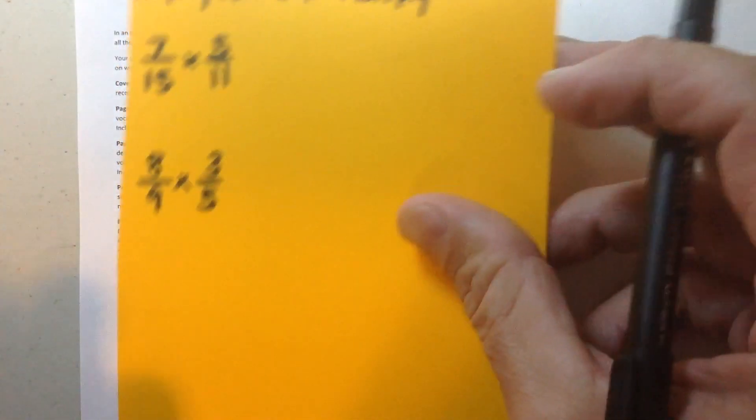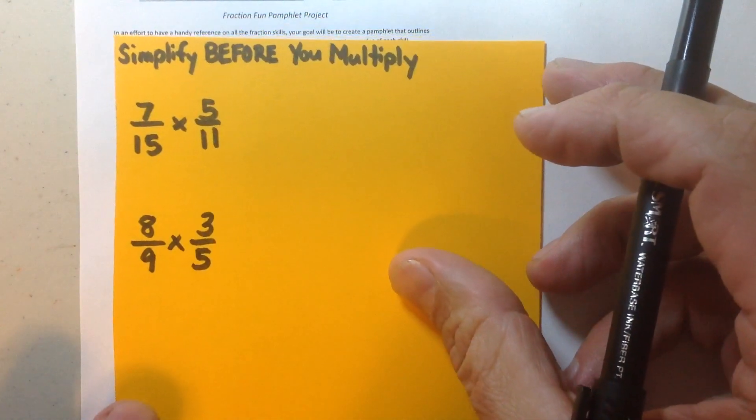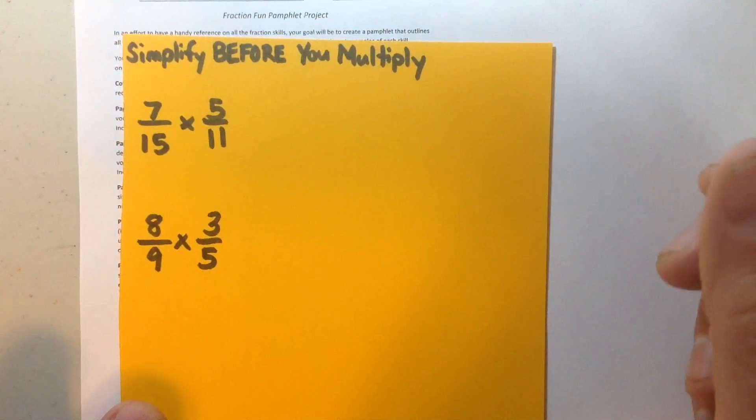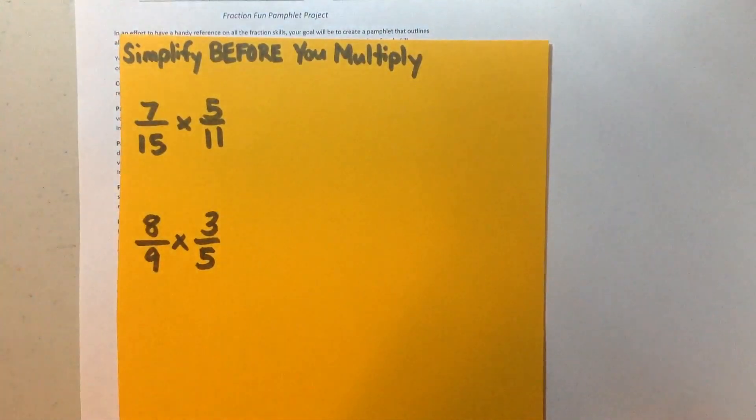The next page is one that you guys have been working quite a bit on which is simplifying before you multiply, also called cross-cancelling. Now before I go over this example, I think it's certainly worth noting that just a few days ago in class we did a write about it where we asked you to create a multiplication problem that includes terms with common factors on the diagonals and then use the example to explain.